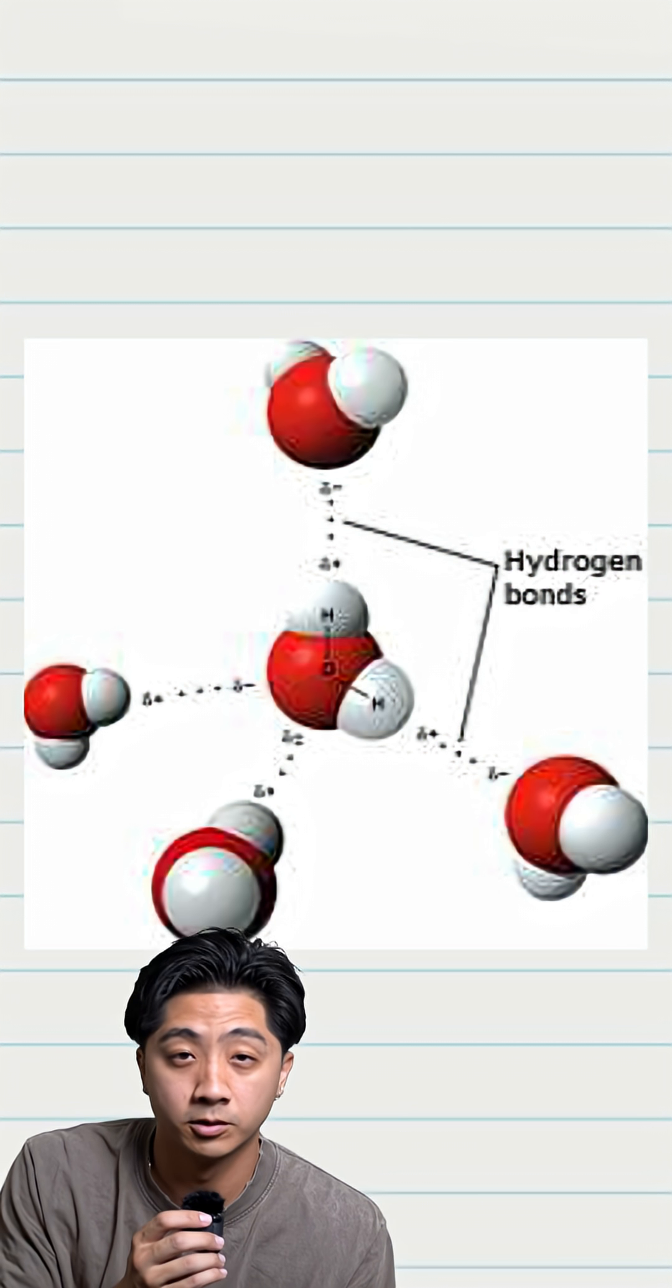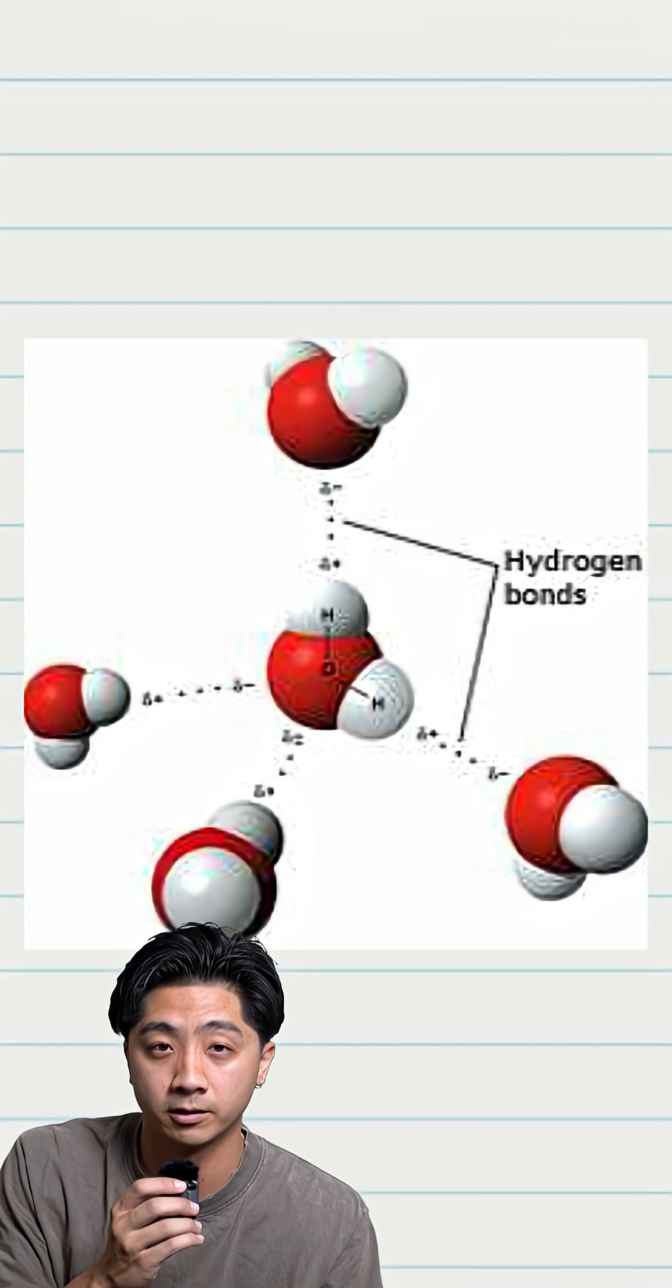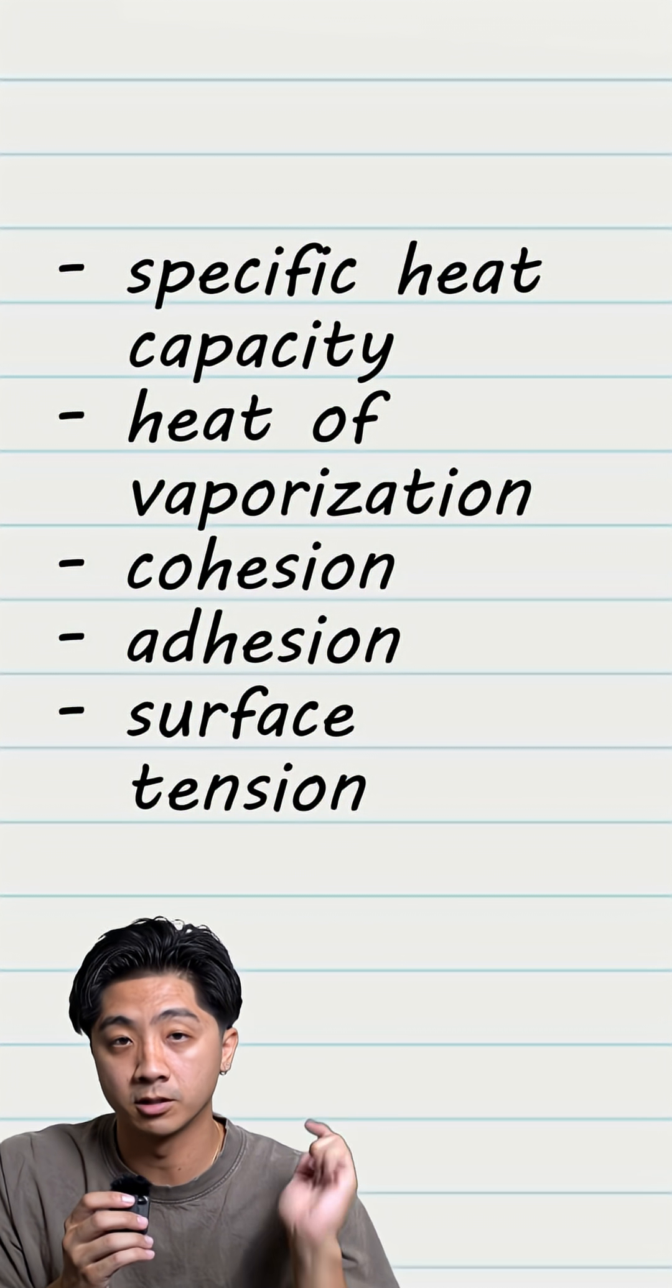When a bunch of water molecules are together, ends with opposite charges will attract, forming hydrogen bonds with one another. This makes way for the properties specific heat capacity, heat of vaporization, cohesion, adhesion, and surface tension.